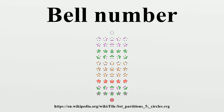The Bell numbers satisfy Dobinski's formula, which can be derived by expanding the exponential generating function using the Taylor series for the exponential function and then collecting terms with the same exponent. This allows BN to be interpreted as the Nth moment of a Poisson distribution with expected value 1. The Nth Bell number is also the sum of the coefficients in the Nth complete Bell polynomial, which expresses the Nth moment of any probability distribution as a function of the first N cumulants.